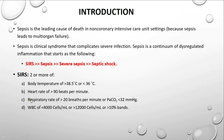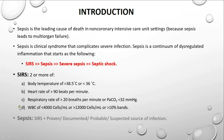If we have two or more of those four criteria, SIRS can be diagnosed. Now if we discover a source of infection, the SIRS will then be called sepsis. So sepsis is SIRS plus a proven or probable source of infection, such as pneumonia or an abscess.